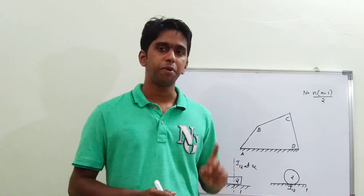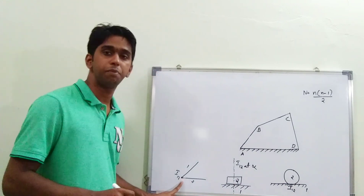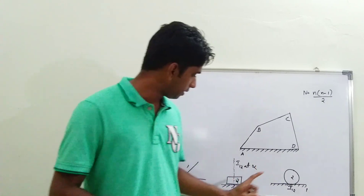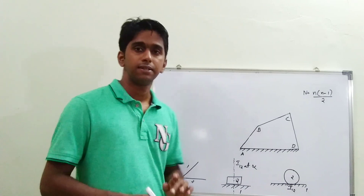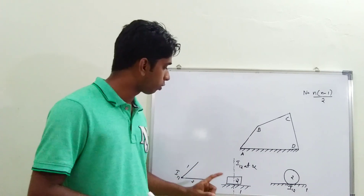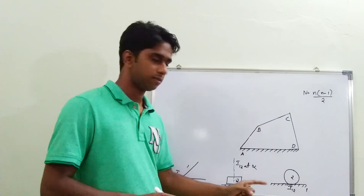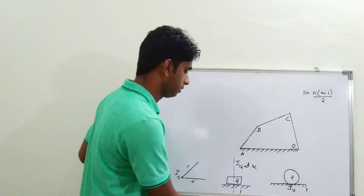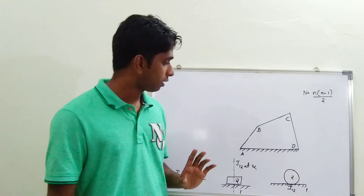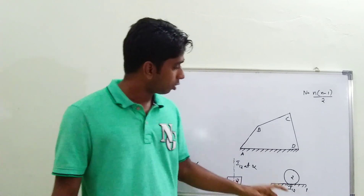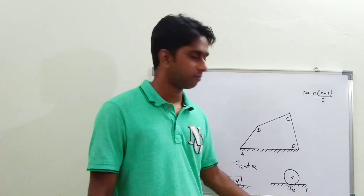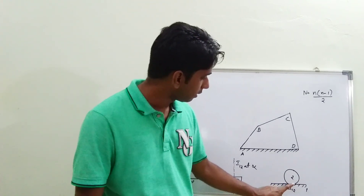Rule number one: in a pivoted joint, the center of the pivot will be the instantaneous center. Rule number two: in a sliding pair, the instantaneous center will be at infinity in a direction perpendicular to the motion of the slider. Rule number three: in a pure rolling contact, the contact point itself is the instantaneous center at that particular instant.